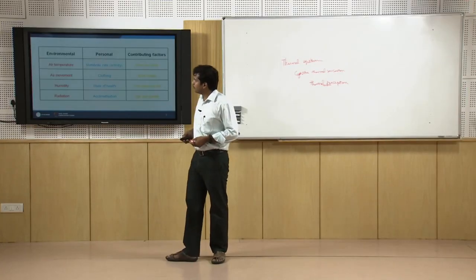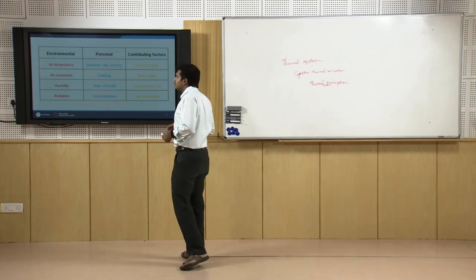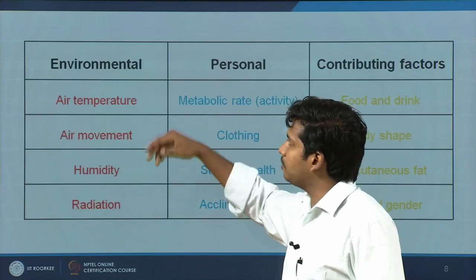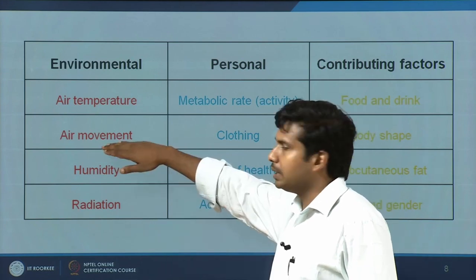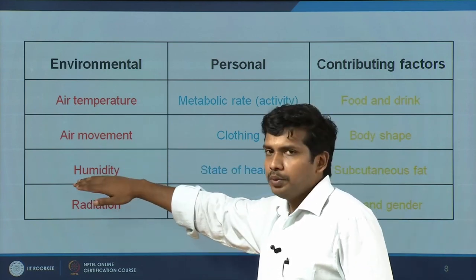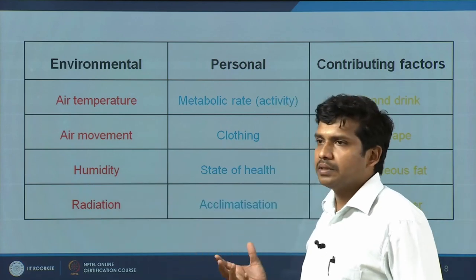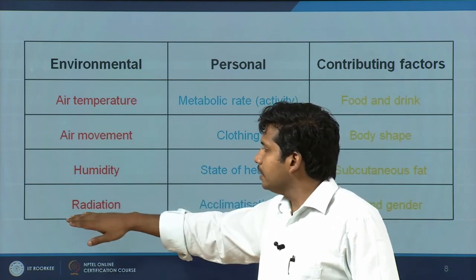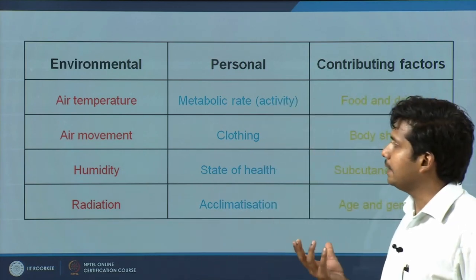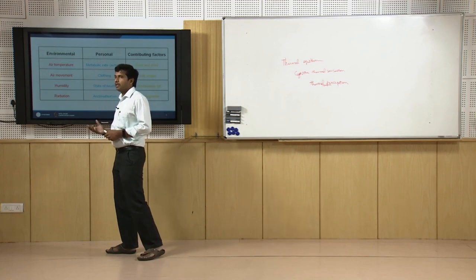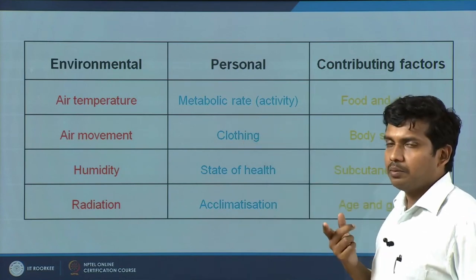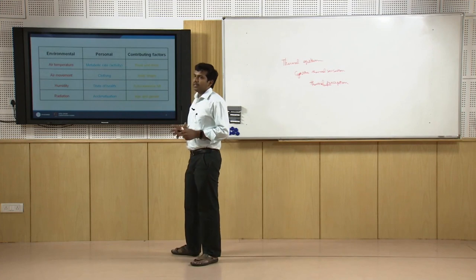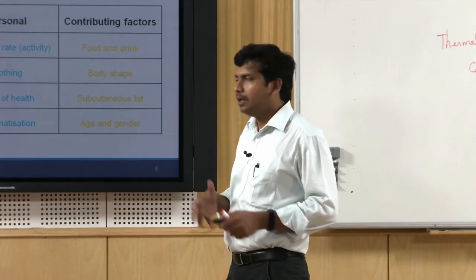What are the factors influencing thermal comfort? There are three different sets of factors. First is the set of environmental parameters: air temperature (referred to as dry bulb temperature), air movement (including air velocity and direction), humidity (relative humidity — the amount of moisture in the air), and radiation controlling radiant exchanges. Then you have personal variables: first is metabolic rate — depending on the activity you perform, your heat generation varies, so the excess heat which needs to be dissipated considerably varies from one activity to another.